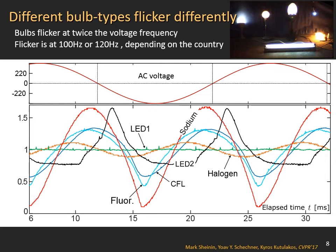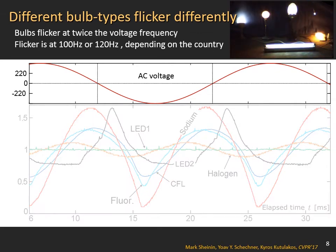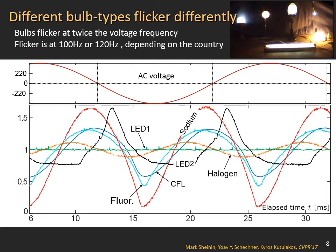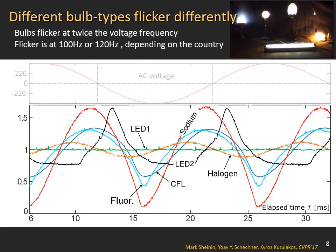Bulbs on the grid are powered by alternating current, namely AC, plotted on top. The AC periodically alternates at a frequency of 50 or 60 Hz depending on the country. Bulbs flicker at twice this frequency, that is 100 or 120 times each second. The flicker signature of bulbs depends on their type and electronics, as plotted below. We call this signature a bulb response function.